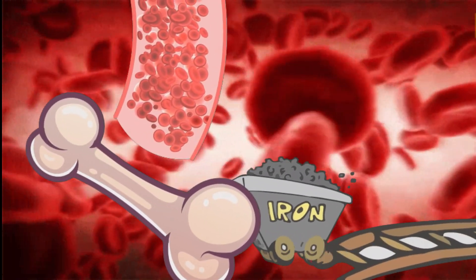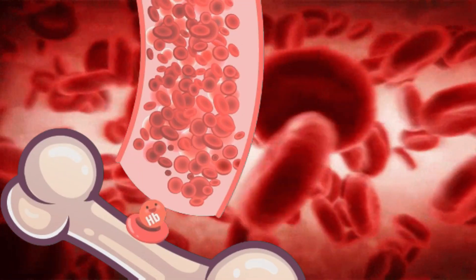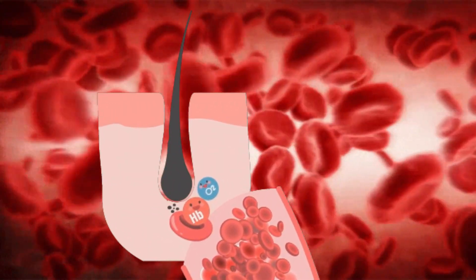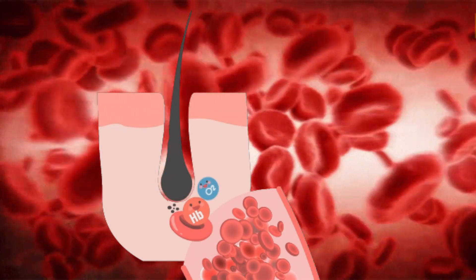Iron helps your body produce hemoglobin, which is a protein in your red blood cells. It carries oxygen to your body cells, helping them grow and repair, and this includes your body cells that help with hair growth.